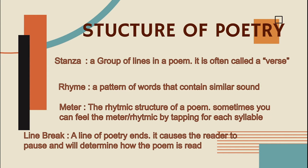Sekarang kita kaji Structure of Poetry. Pertama, Stanza — sudah dijelaskan tadi, ada juga di dalam sajak sebagai a group of lines in a poem, disebut verse. Kemudian ada rhyme: a pleasant word with similar sound, biasanya di belakang kata-kata dari sebuah puisi bunyinya hampir sama. Kemudian meter: the rhythmic structure of a poem. Terkadang bunyi ritminya hampir sama atau jumlah syllable-nya bisa dihitung sama.